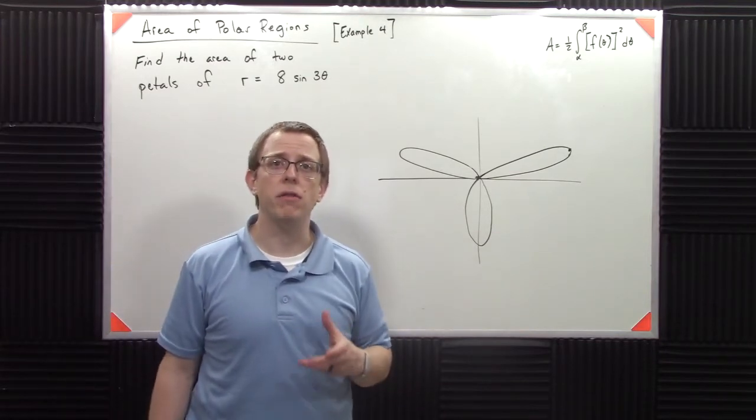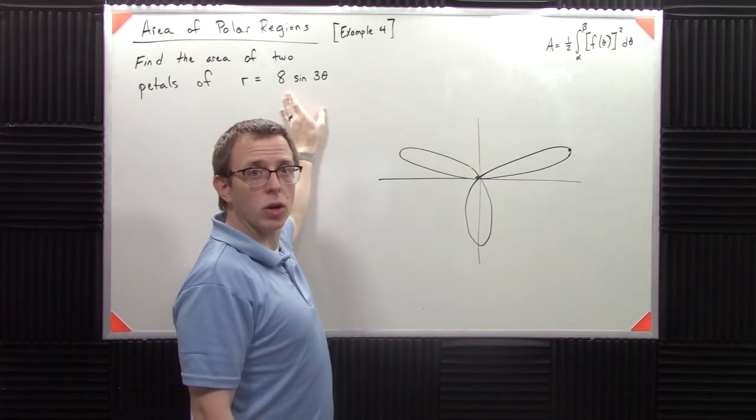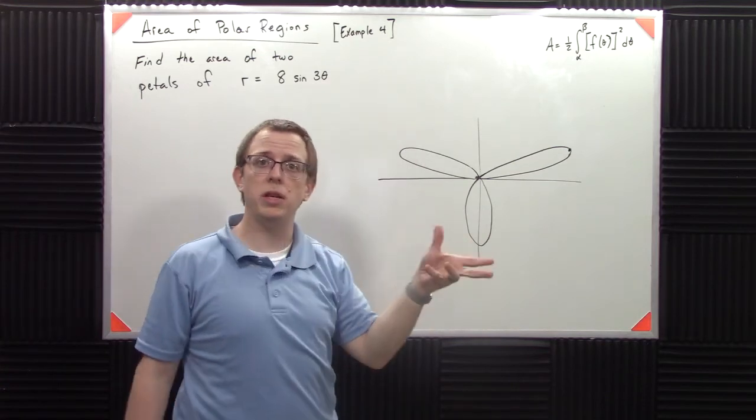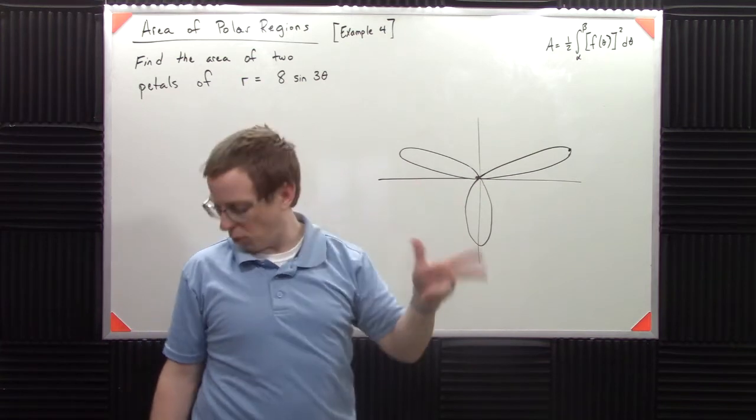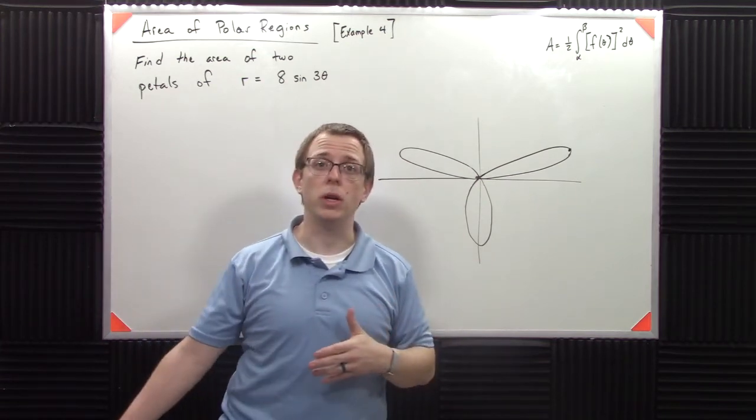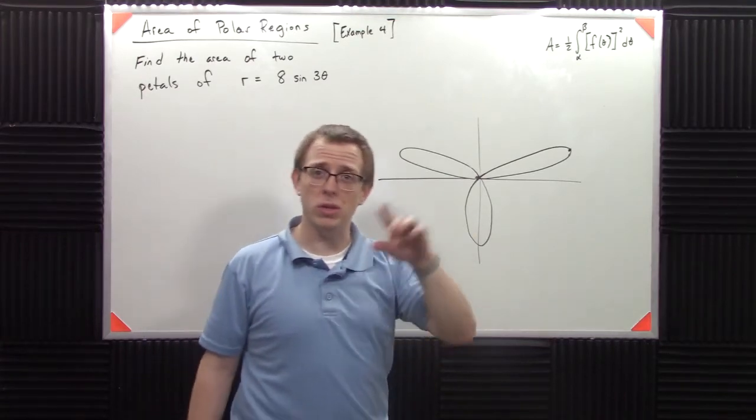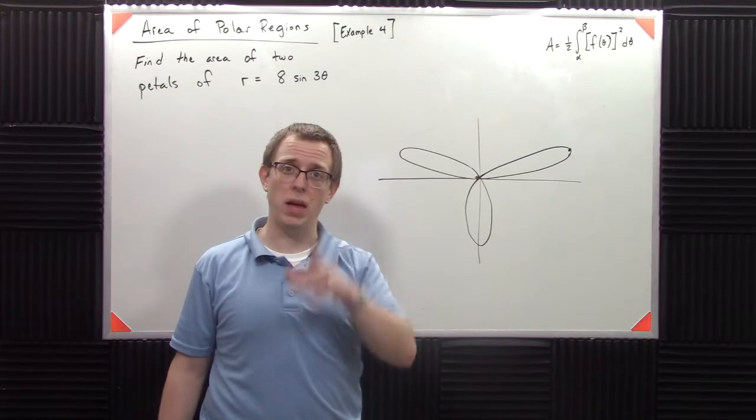So generally speaking when you have sine of some number times theta or cosine of some number times theta, what you get is this pedaled form. I don't really know a better word for it. I think it's rose curves as sometimes people use, but I've always seen them drawn with petals.